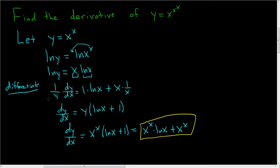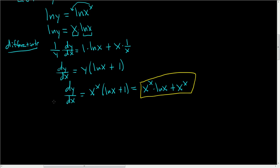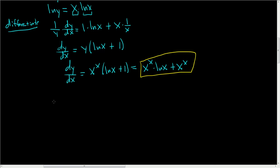Now we will do the original problem — the derivative of x to the x to the x. To recap, we know that the derivative of x to the x is x to the x times the natural log of x, plus x to the x.